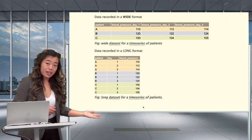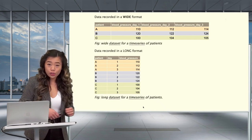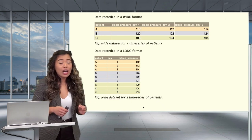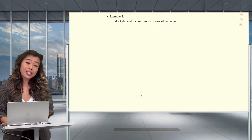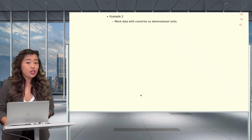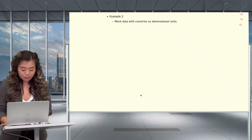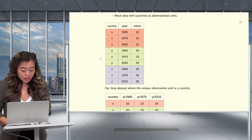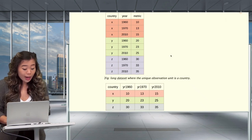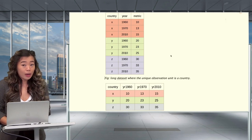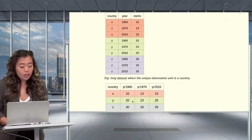In the long format data, the observational units — again, patients — now occupy multiple rows, with one measurement per row. Here's another example with mock data where our observational units are countries. Again, in the long format, each country occupies multiple rows with one unique measurement per row. For the wide format, each country occupies a single row with multiple measurements across three columns.